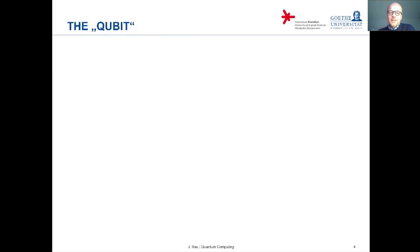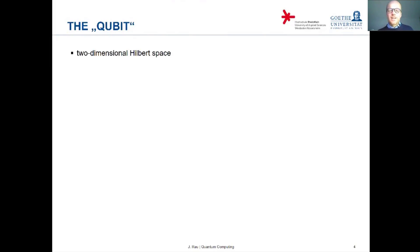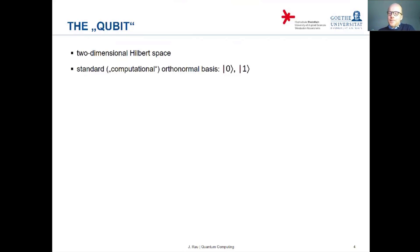We will talk about the basic information carrier in quantum computation: the qubit. The qubit is the simplest quantum system you can imagine. It's a quantum system in a two-dimensional Hilbert space — that's the smallest non-trivial Hilbert space you can think of. And like in every Hilbert space, you can define a basis. The standard notation for the basis is |0⟩ and |1⟩ — orthogonal, normalized basis states in our two-dimensional Hilbert space.